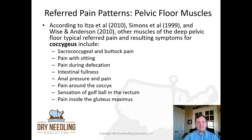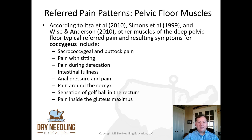For coccygeus: sacrococcygeal and buttock pain, pain with sitting, pain during a bowel movement, a sensation of intestinal fullness, anal pressure and pain, pain around the coccyx, sensation of a golf ball in the rectum, and pain inside the gluteus maximus are all implicated with the coccygeus muscle.